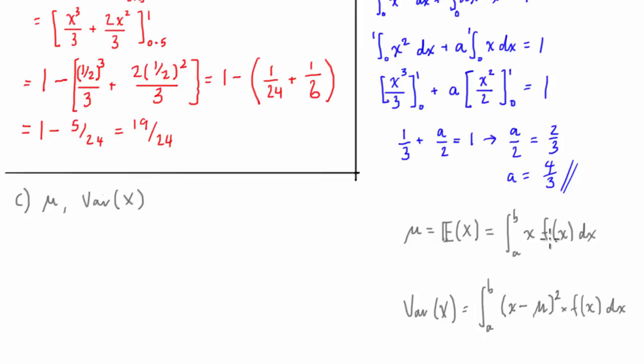So the mean, the expected value of x times f of x dx, so let's write that down, is equal to the integral from 0 to 1 of x times the function which is equal to x squared plus ax which we worked out a to be 4 over 3, so it'll be 4x over 3 dx. Cool, so what we can do is we can multiply that out and we get the integral from 0 to 1 of x cubed plus 4x squared over 3 dx. We can then evaluate that integral.